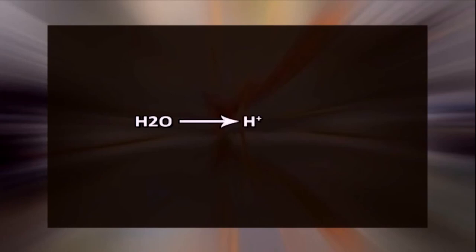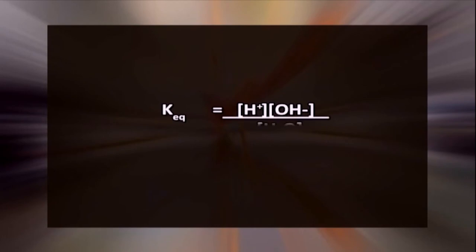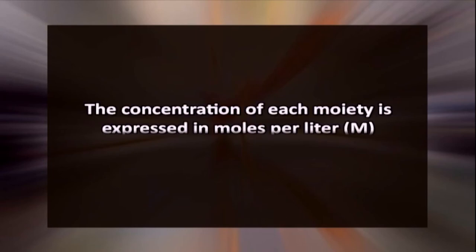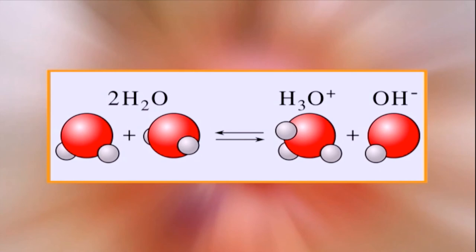It is an example of autoprotolysis and exemplifies the amphoteric nature of water. The ionization of water can be represented as H2O gives H+ plus OH-. The law of mass action can be applied defining the equilibrium constant for the reversible ionization of water. The concentration of each moiety is expressed in moles per liter M. The degree of ionization of water is very low at any given time. The amount of hydronium ions and hydroxide ions present in water is extremely small and consequently the concentration of undissociated water molecules is virtually unchanged by this minute ionization and may be considered a constant.